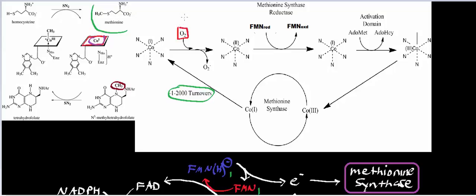If you imagine what's happening, one of the electrons from some orbital here might get transferred onto molecular oxygen. I use the fish hook arrow because it's a one-electron transfer. In the process, you end up with a superoxide produced because the oxygen picked up the electron and gets reduced. So you can imagine that the cobalt in the center, which originally had a one plus oxidation state, gets oxidized — this particular cobalt now is in the two plus state. It turns out that in the two plus state, methionine synthase's cobalt is useless. You have to get it back to the one plus state.